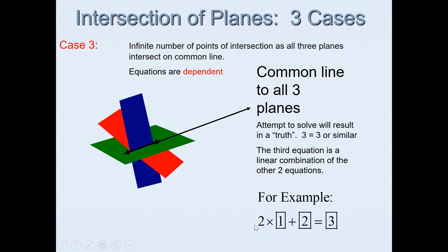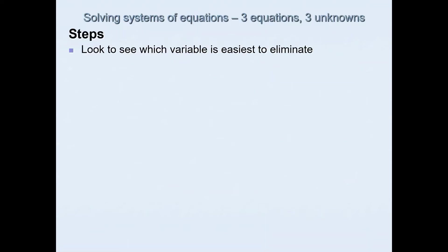An algebraic indicator of Case 3: if you multiply the first equation by two and add it to the second one, you will end up with the third equation. This is how you can algebraically confirm that the equations are dependent, and visually the planes will intersect in a line as shown.